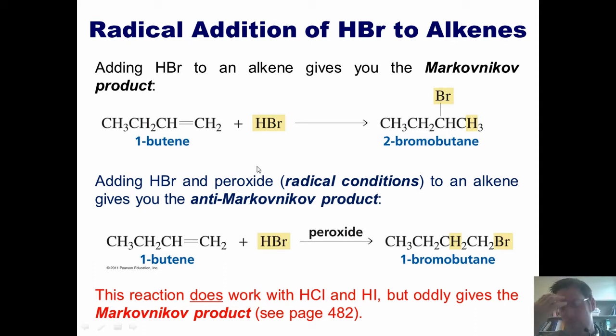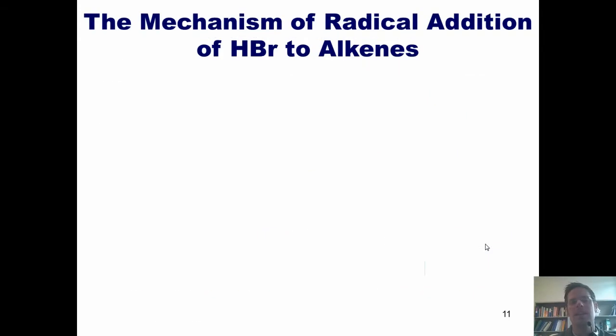Now at this point, you might be thinking, I understand why adding HBr to a regular alkene gives me the Markovnikov product. But why in the world is doing the exact same thing with peroxide added give me the anti-Markovnikov product? I thought you'd never ask. The answer, of course, is explained by looking at the mechanism. How in the world does this mechanism go?